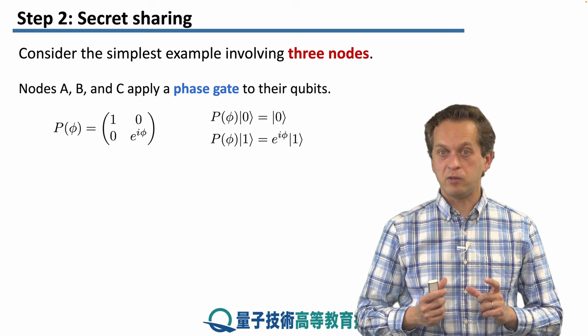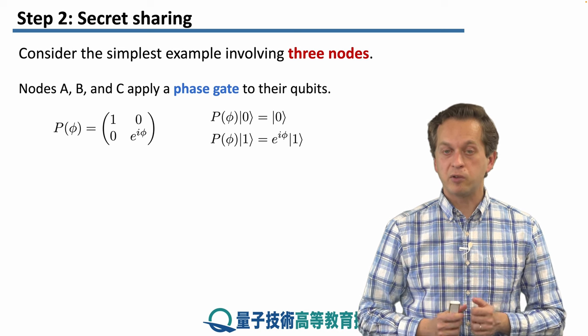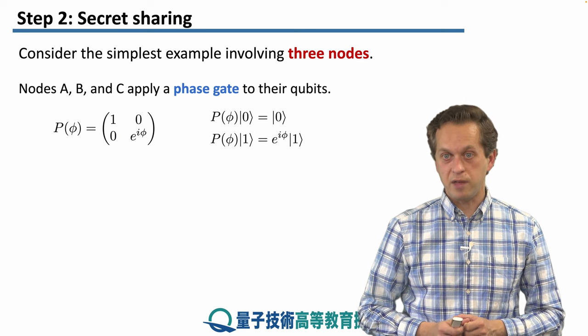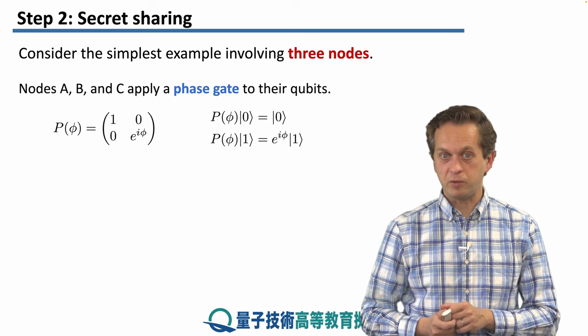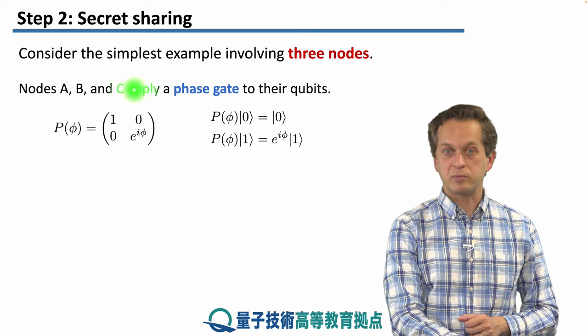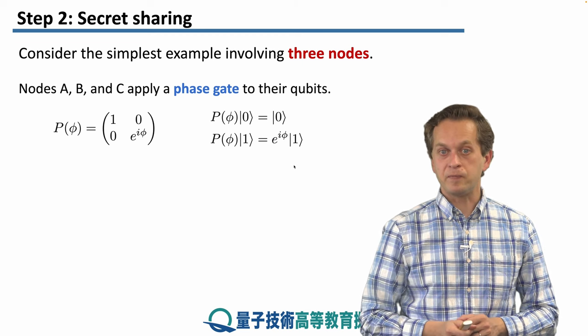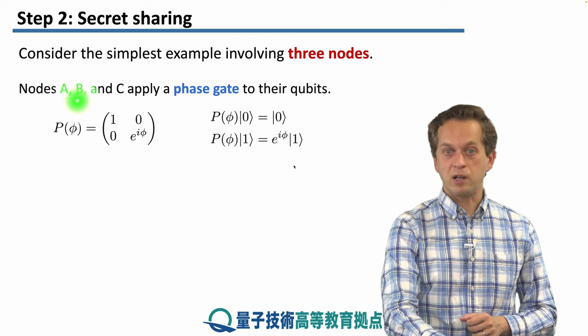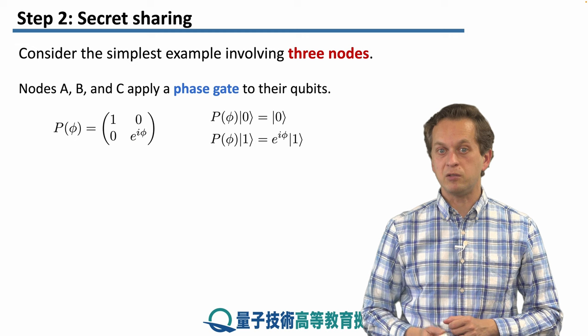Then what the nodes do, depending on what number they generated, they're going to apply a phase gate to their qubit in their possession in their quantum memory. To remind you, a phase gate is given by this following expression. So it has diagonal elements equal to one at this phase e^(iφ), and the off-diagonal elements are zero.